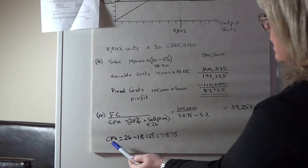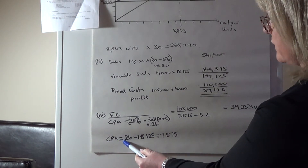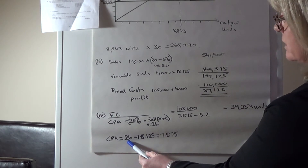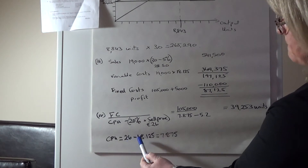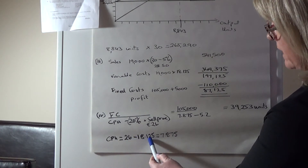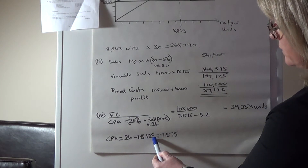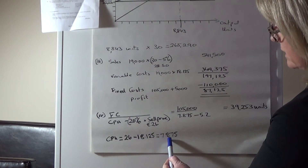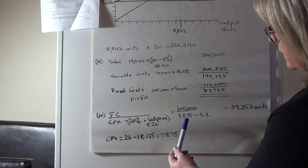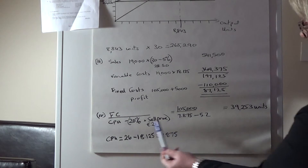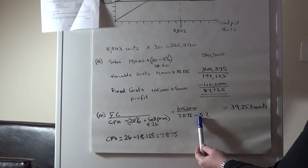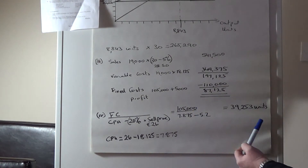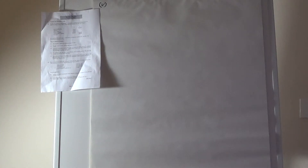So the denominator is 7.875 minus 5.20, giving 2.675. Dividing 105,000 by 2.675 gives approximately 39,253 units to be sold. To clarify: the contribution per unit of 7.875 came from the new selling price of 26 minus the variable cost per unit of 18.125, and then we subtract the 20% profit requirement to get the effective denominator.